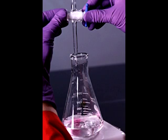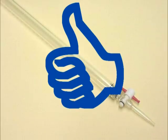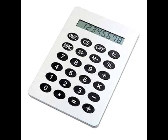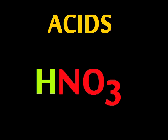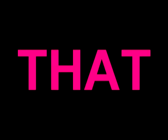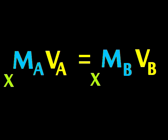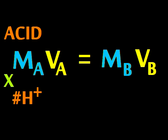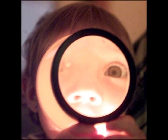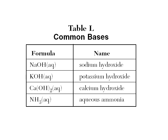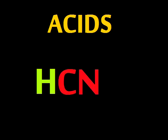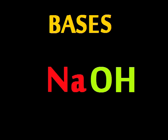MaVa = MbVb can be used to calculate concentrations of an acid or a base when you titrate. Just remember that Ma or Mb will get multiplied by the number of each ion by which they're identified. Acids and bases, in life you have a place, acids have a hydrogen, hydroxide for a base.